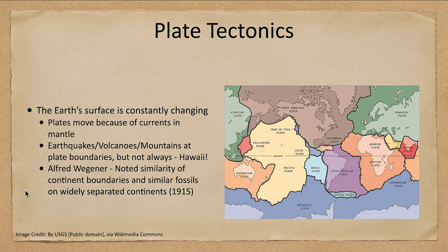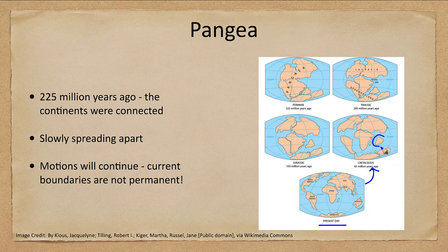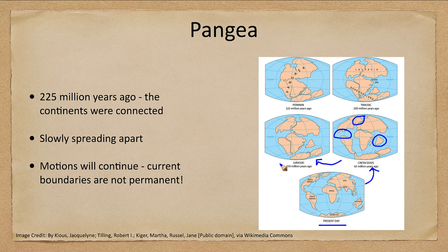We can look at how this might have changed over time. At the bottom is our present day. Going back 65 million years to the end of the age of the dinosaurs, things were quite different: India was separate and was an island, there was no Central America, North and South America were separated, and North America and the Eurasian plate were actually touching. Going back further to 150 million years ago in the Jurassic era, India is still out there, Australia is connected with Antarctica, and the South American and African plates fit together very well.